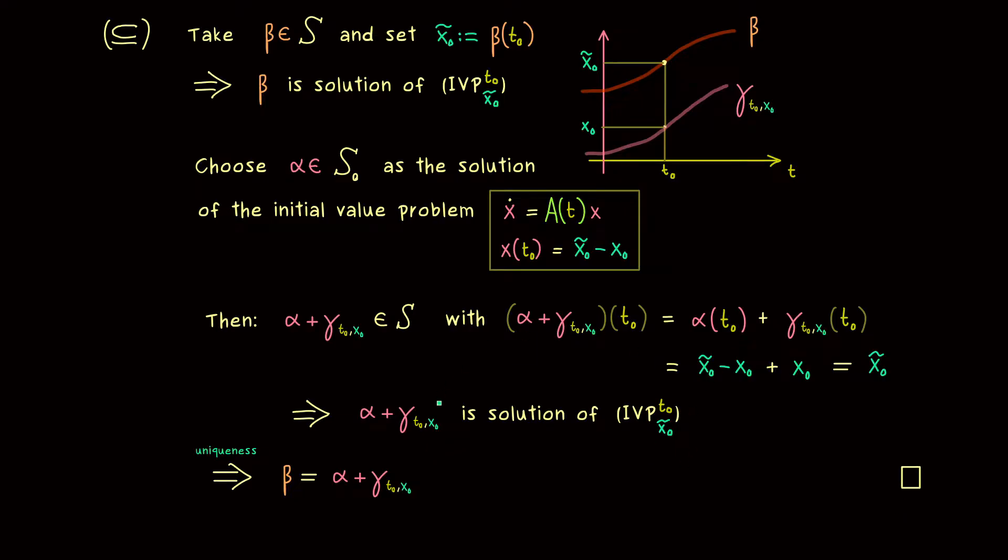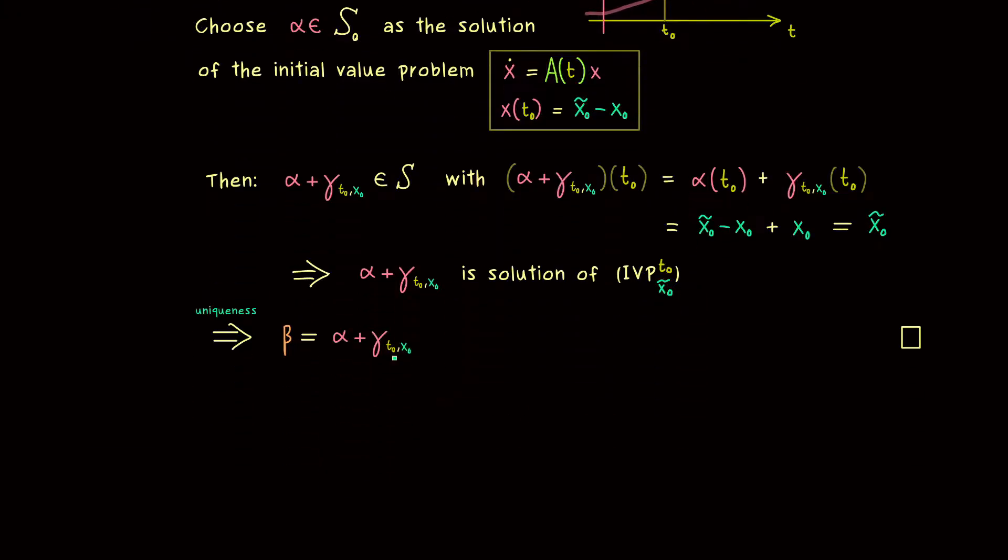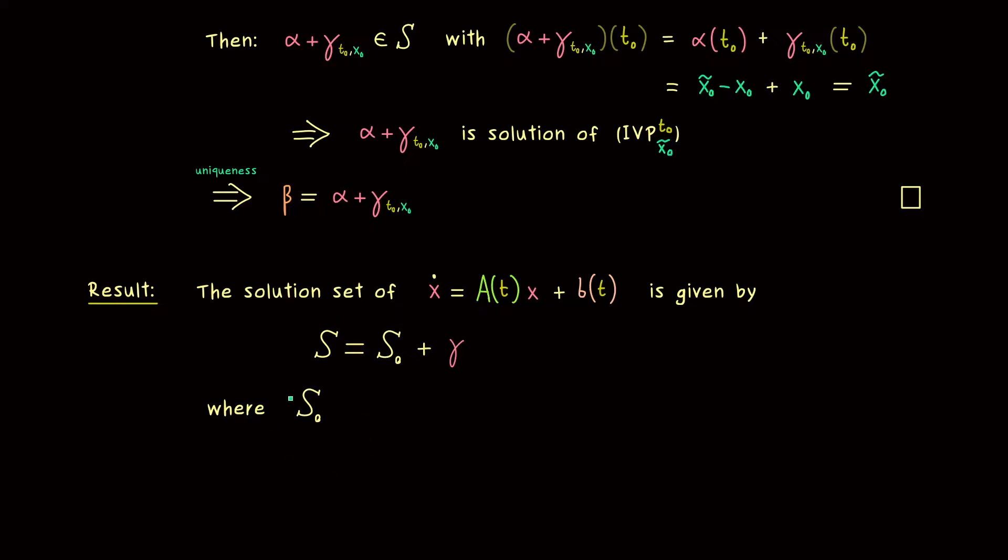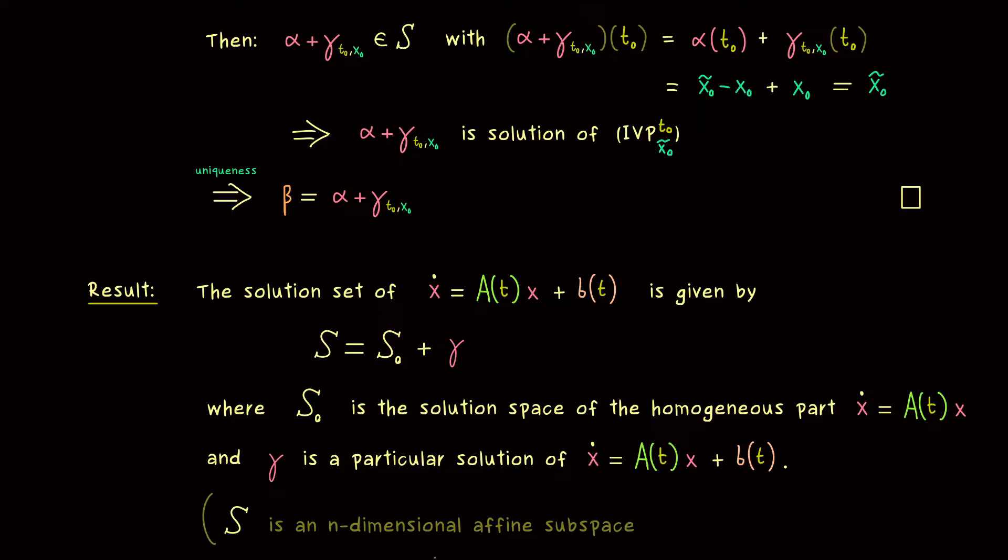And now in order to remember it, let's formulate the result again. The solution set of the system of linear differential equations is given as the set S₀ + gamma. Where S₀ is the solution space of the homogeneous part. And gamma is just one chosen solution of the whole system. We say it's a particular solution because it does not matter which one we choose. But it's a fixed one for the whole description. And that's the whole result. The solution set of the system of linear ODEs is an affine subspace of dimension n. And as always the number n gives the size of the system.